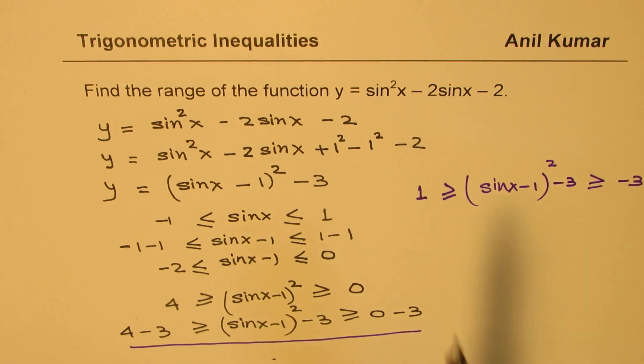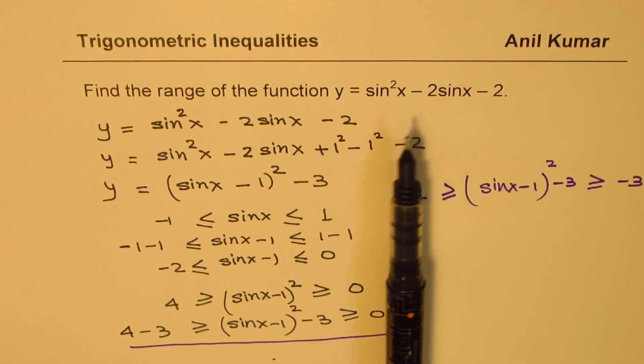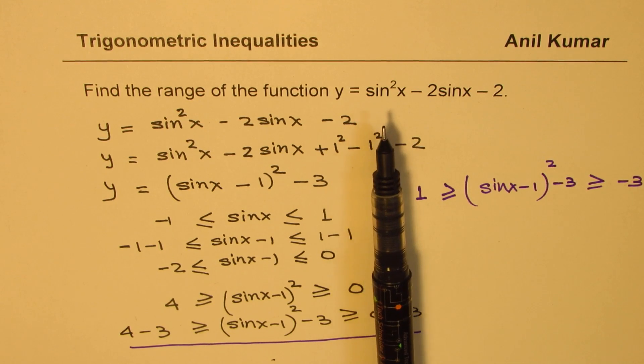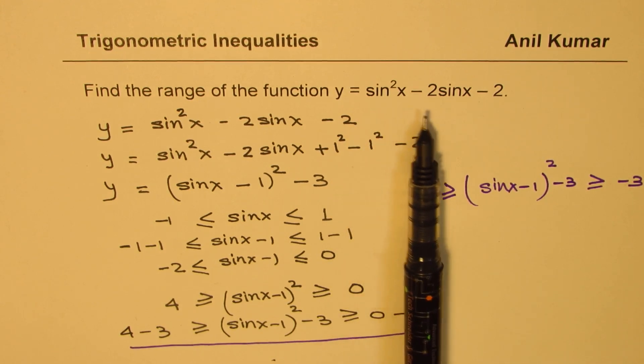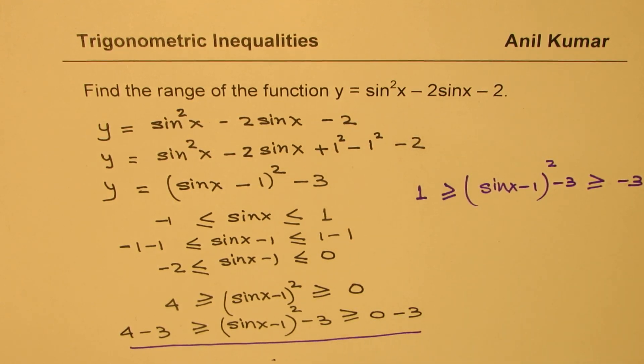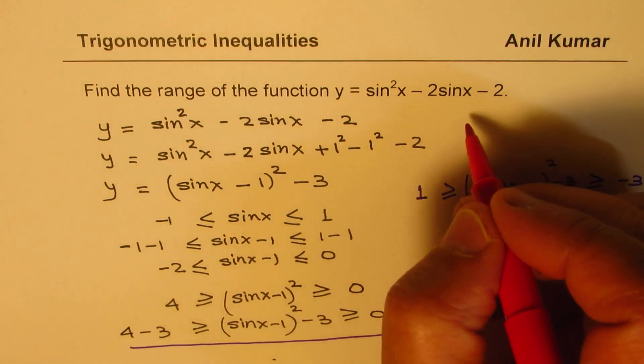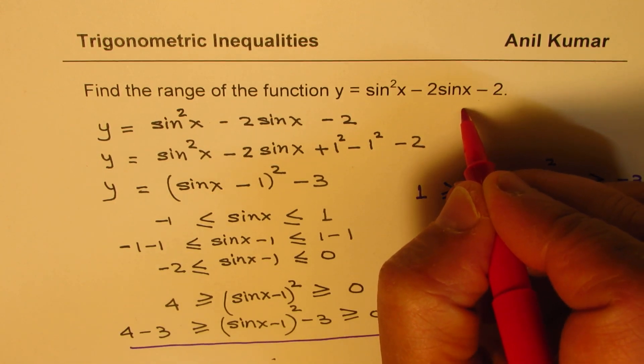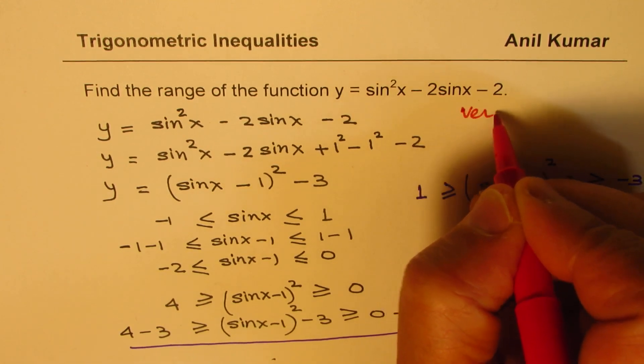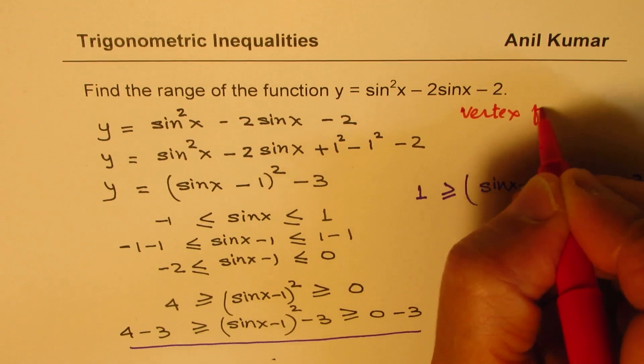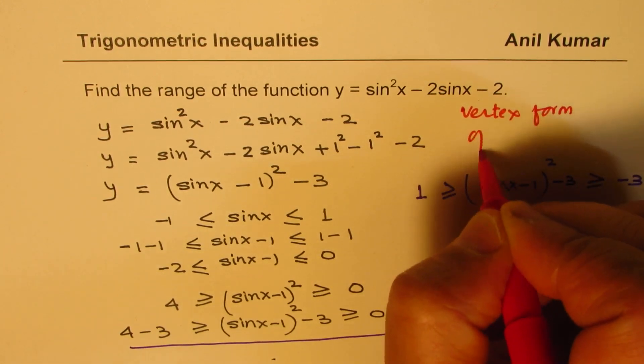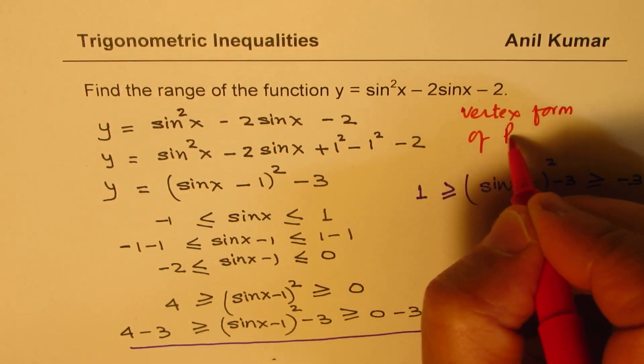So that is how you get the range of the given function. So I hope the steps are absolutely clear. So whenever you have a question like this where you are trying to find the range of a function or even minimum and maximum values of a function, that is the way to go about. So the critical step here is to complete the square and correlate with vertex form of a parabola.